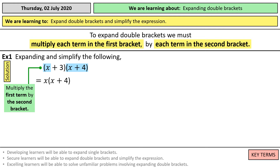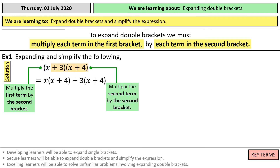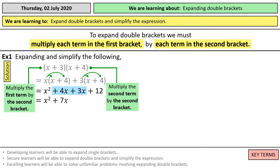So x times x, and x times 4. Then we're going to do the same with the second term. You'll notice it looks like those questions in the starter. So x times x is x squared, x times 4 is plus 4x, 3 times x is 3x, and 3 times 4 is 12. And what we're left with is x squared plus 7x plus 12.